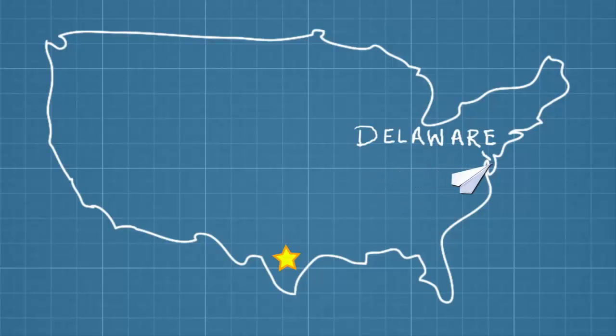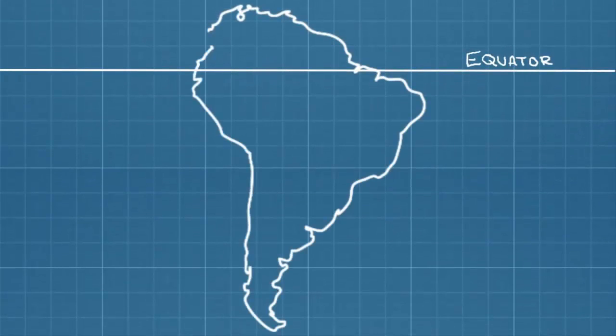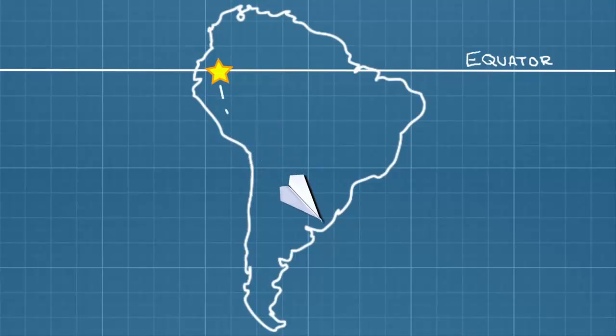So from your point of view in Texas, the plane would have taken a curved path to the right. The opposite would happen in the southern hemisphere. An object traveling from the equator to the south would get deflected to the left.